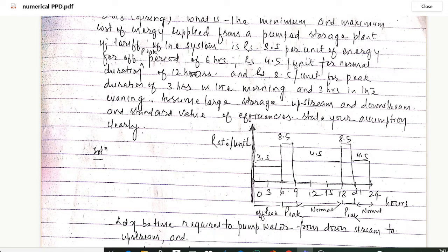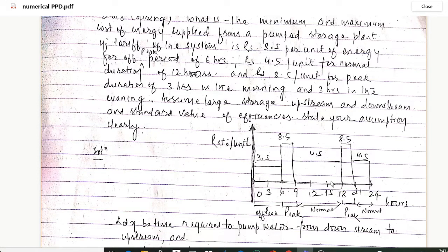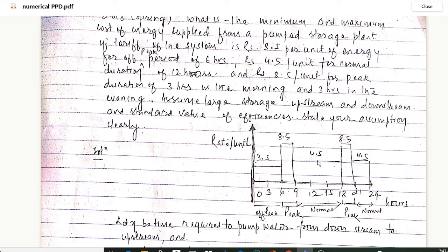The rate is Rs 4.5 per unit for normal duration of 12 hours. The remaining hours account for normal duration: 9 to 18 is 9 hours, plus 3 additional hours from 21 to 24, totaling 12 hours at the normal rate of Rs 4.5 per unit.